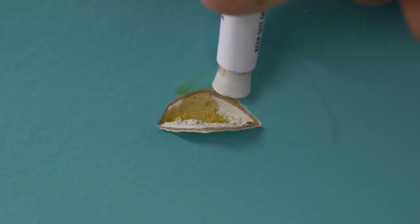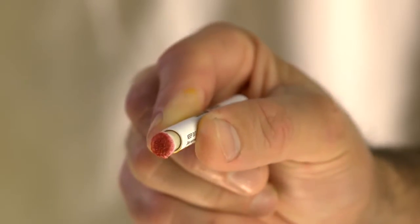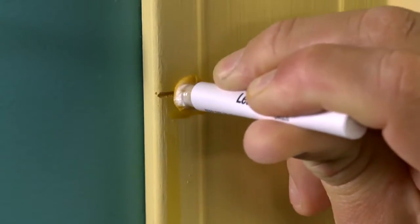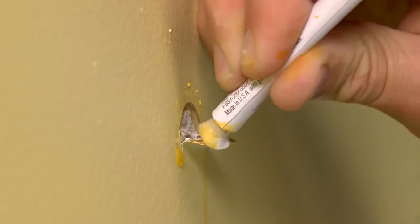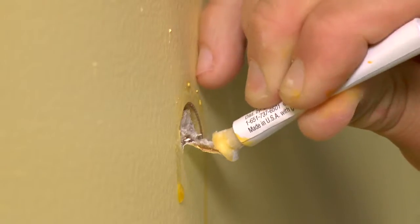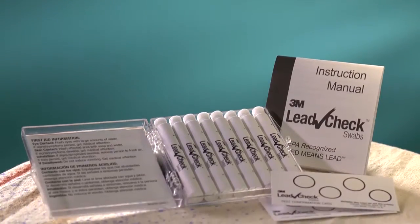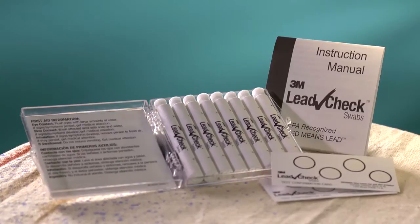This test method is for testing surfaces for the presence of lead. The test method is different for testing wood or testing plaster and drywall. Please use the test method described for each surface type. The methods are described in detail in the instructions that are in your kit.